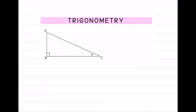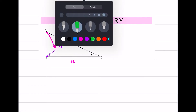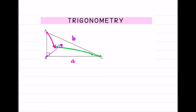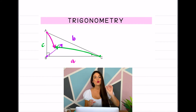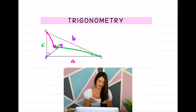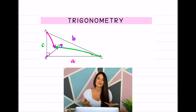Now what do I mean by opposite, adjacent, and hypotenuse? Let's get into labeling our triangle. If we look at this right-angled triangle ABC: vertex A has the side opposite it labeled lowercase a; vertex B has side opposite it labeled lowercase b; and vertex C has side opposite it labeled lowercase c. The hypotenuse can be labeled as line AC or lowercase b.